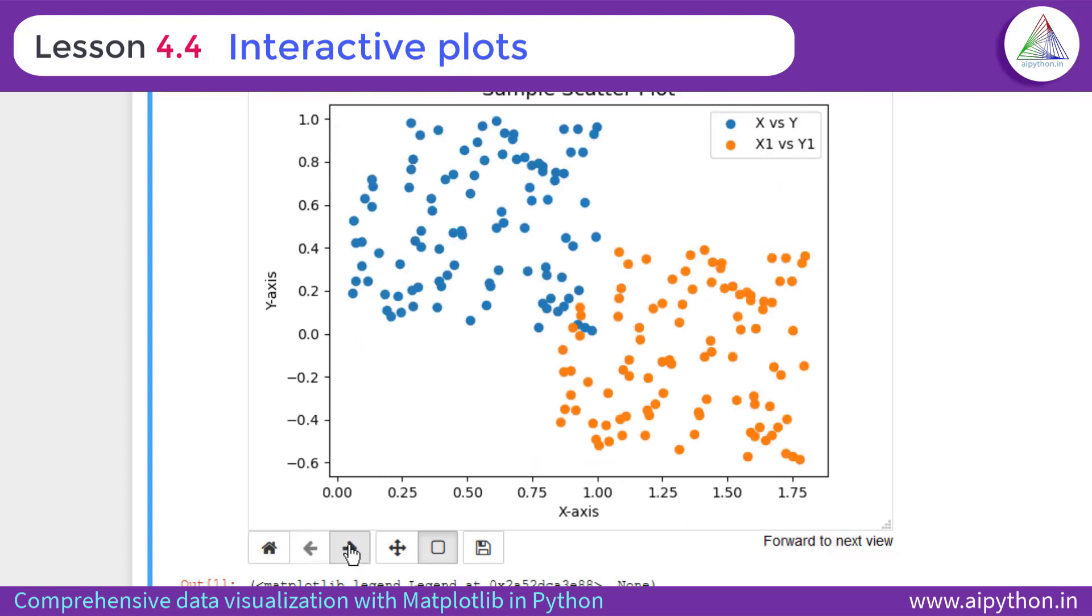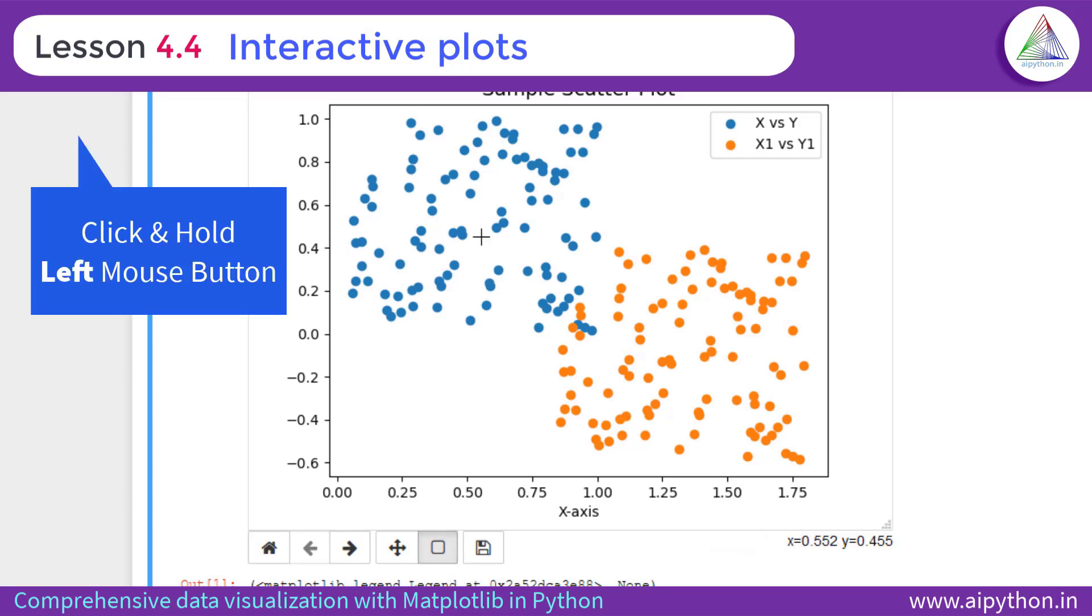So this is the function of these two. As you can see here, zoom to rectangle. So just hold the mouse button, left button and then create a portion. This portion will be visible in the entire canvas.